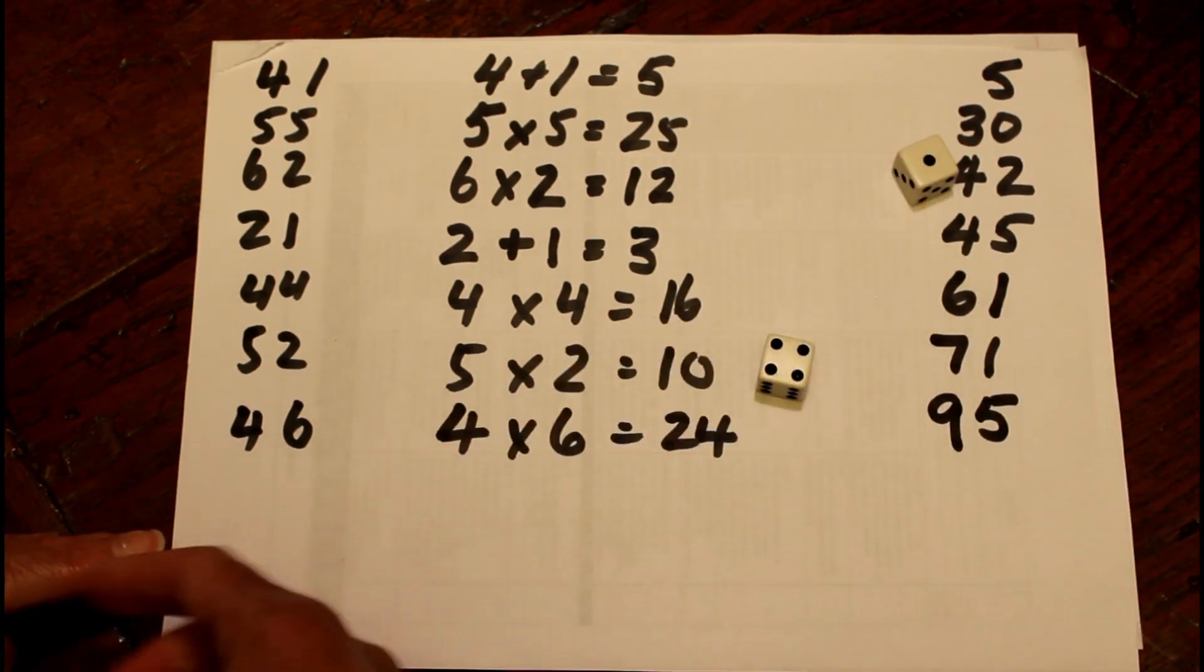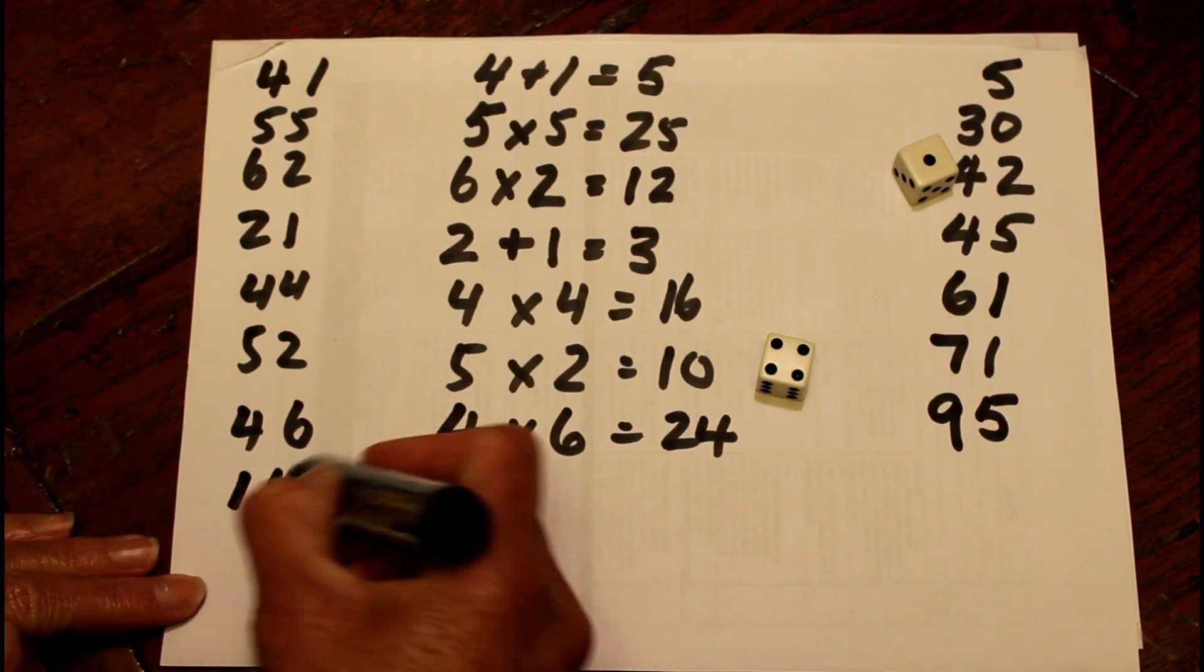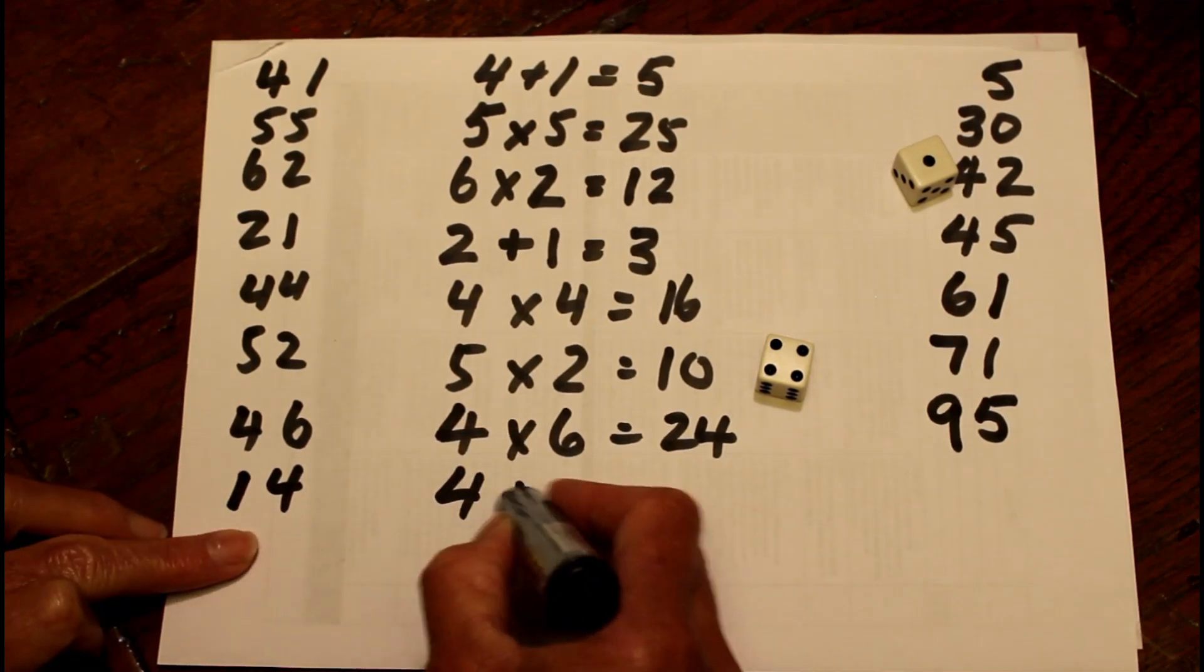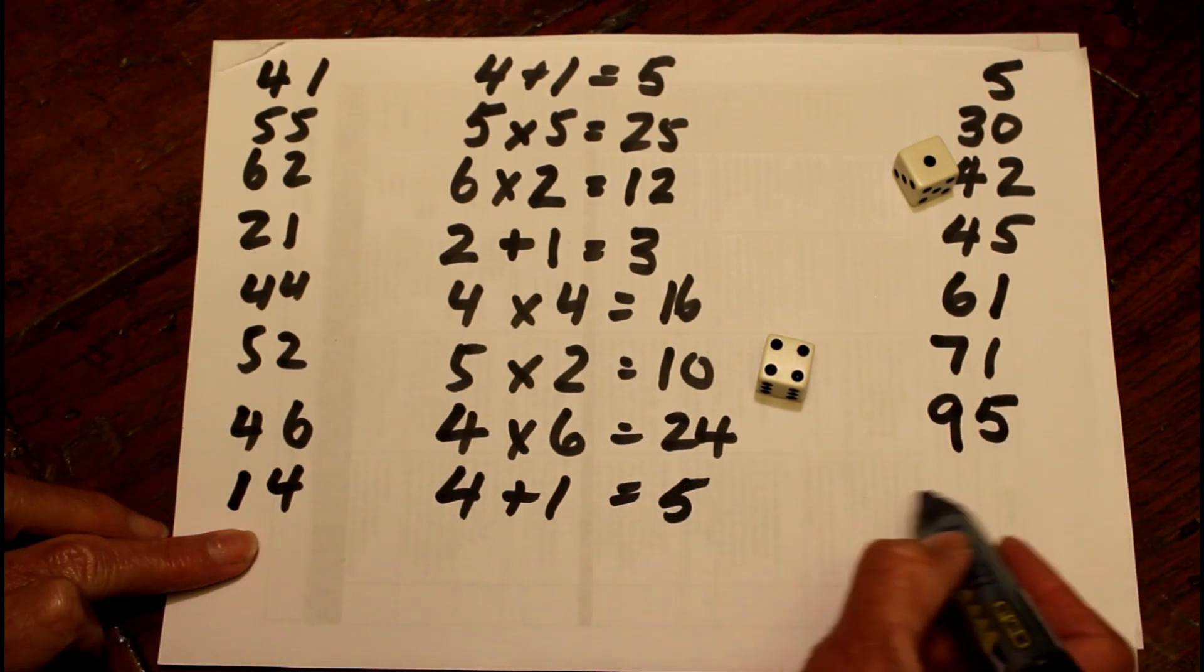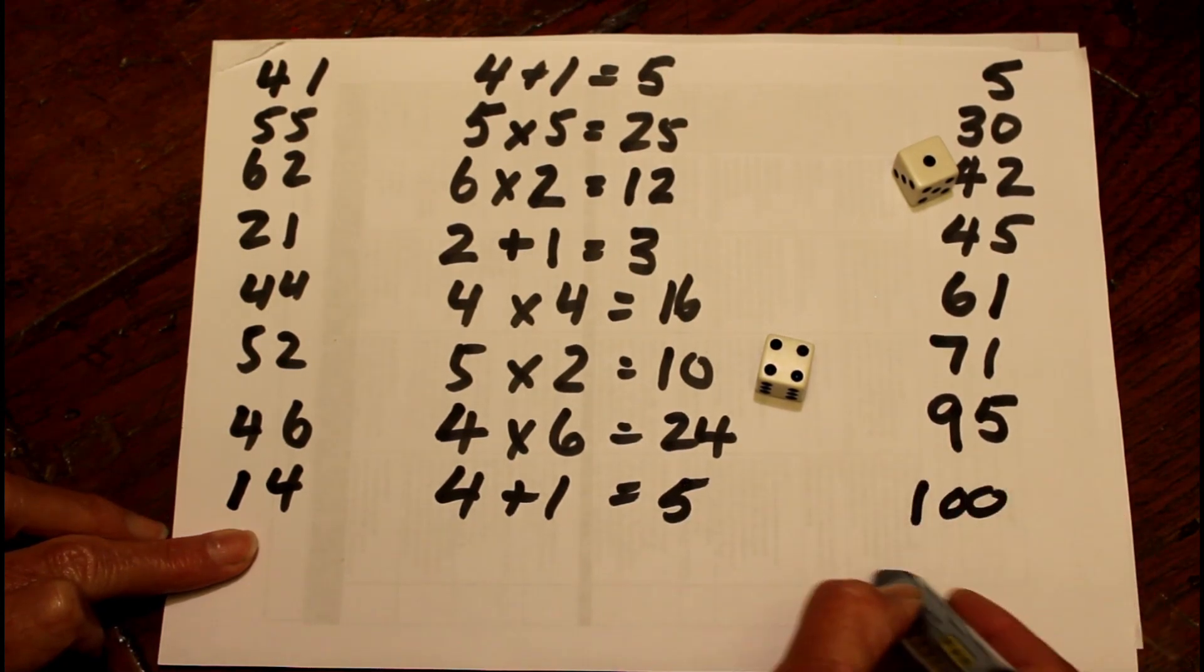4 and 1. I know that if I add 4 plus 1 together, I will get 5, which 95 and 5 is going to give me the perfect 100.